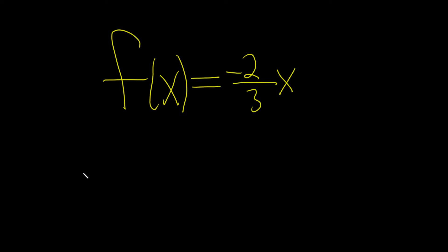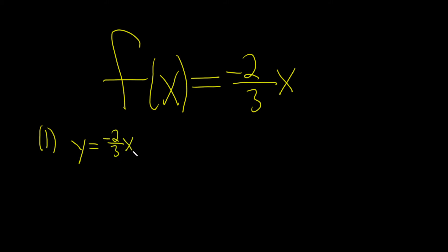In this problem, we're going to find the inverse of this function. To do that, we're just going to follow these steps. The first step when finding the inverse is to replace your function with y. So y equals negative 2 over 3 times x.